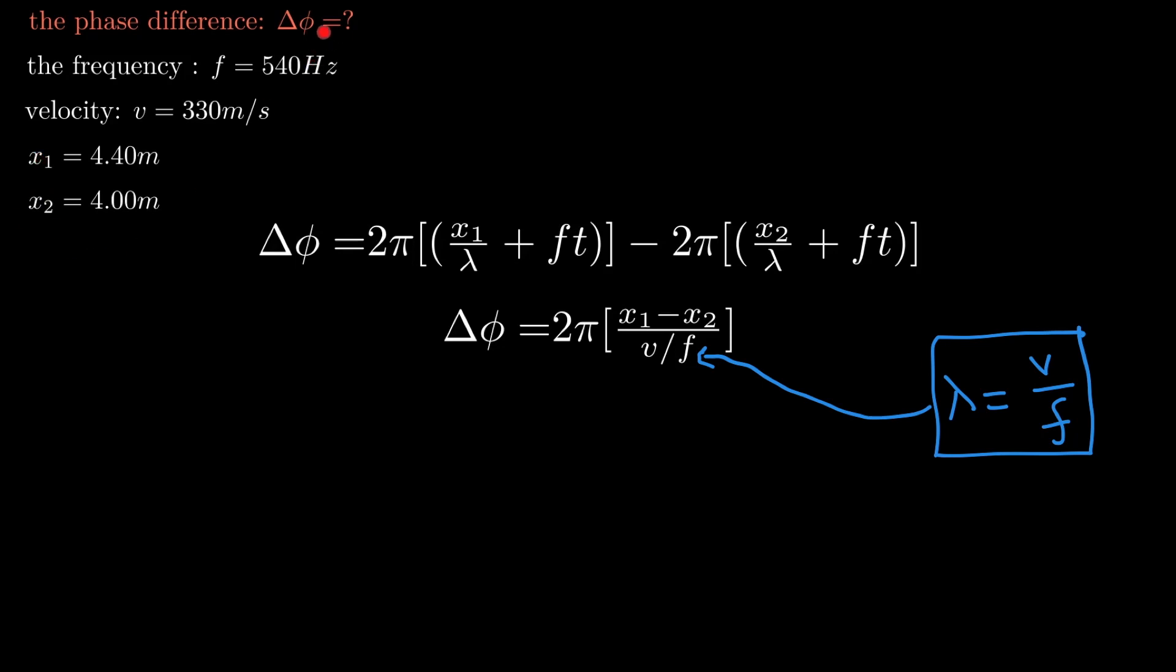Now we know the values of velocity, f, x1, and x2 from the data. We can calculate delta phi by substituting these values, which gives us 4.12 radians. This is the phase difference.